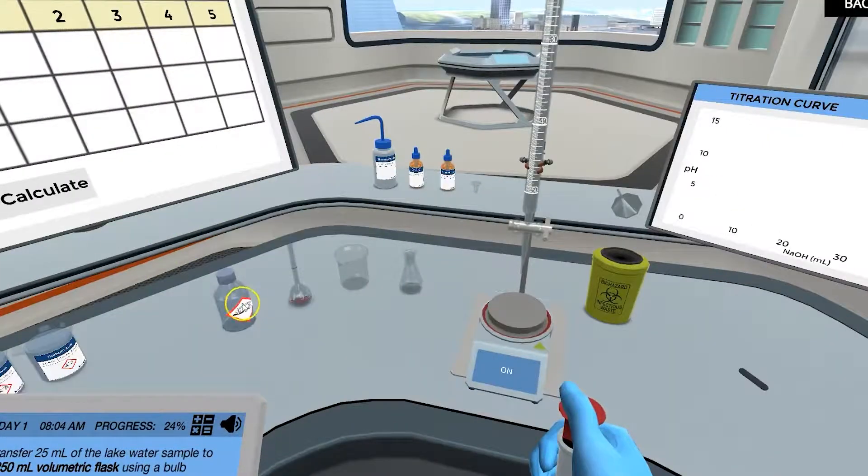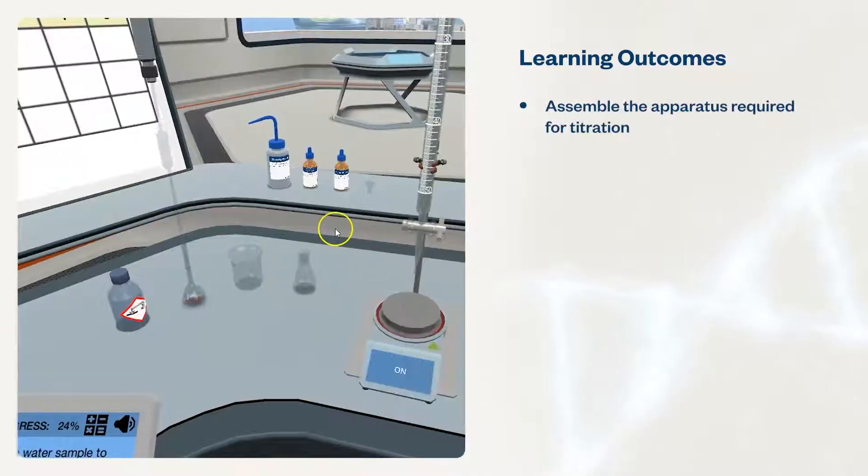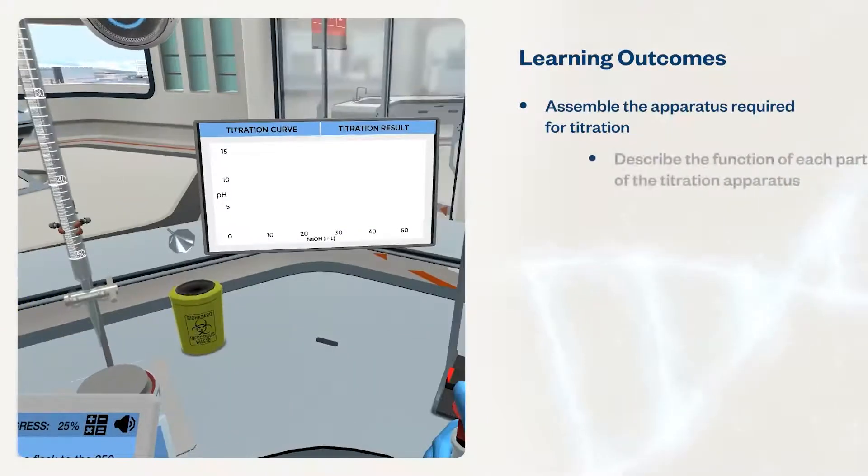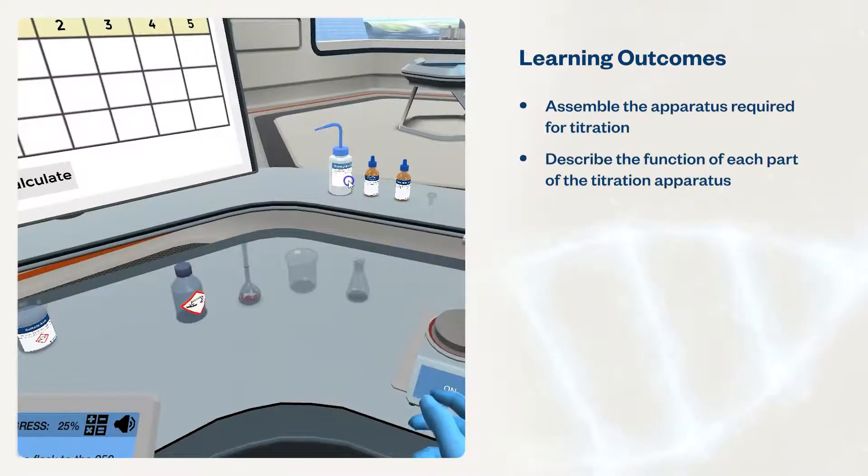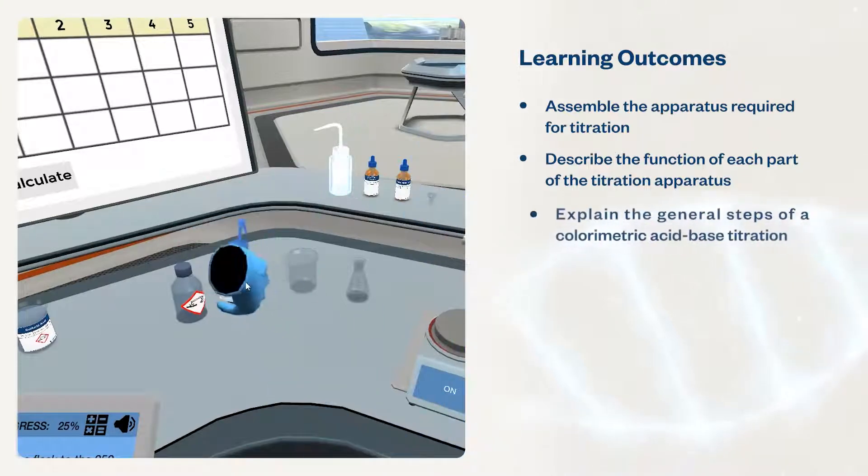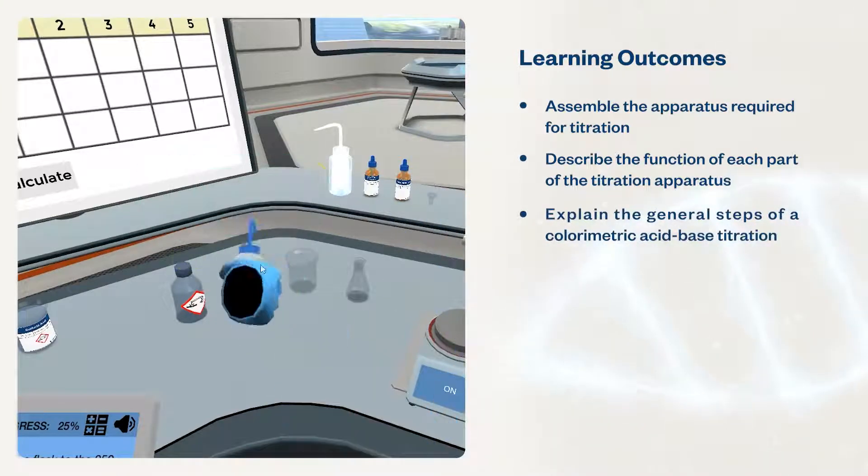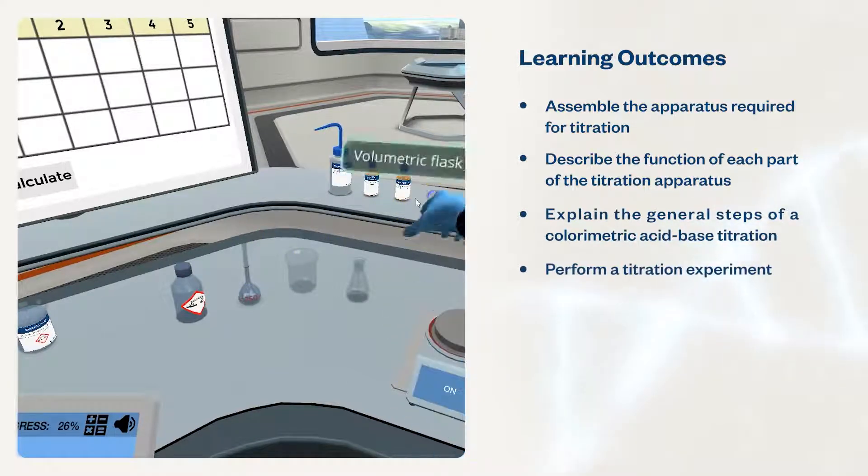These simulations will help students assemble the apparatus required for titration, describe the function of each part of the titration apparatus, explain the general steps of a colorimetric acid-base titration and its uses, and perform a titration experiment.